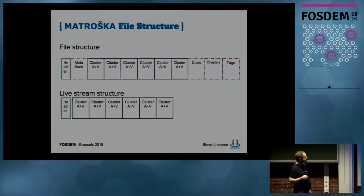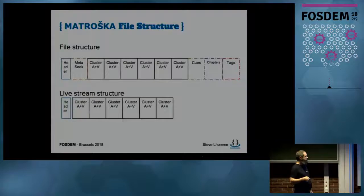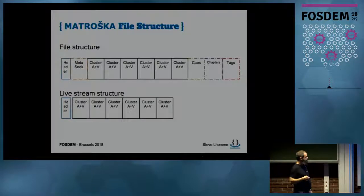Inside a Matroska file, you first have a small header — the meta-seek — which tells you where the parts are, so you can quickly jump around. Then there are the actual audio and video clusters. There's a cues section for seeking quickly to a position. There are chapters like regular chapters, and tags for all metadata — you can tag both the track information and the content with tags.